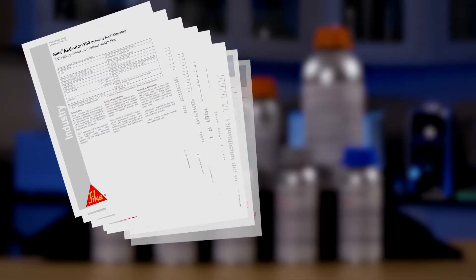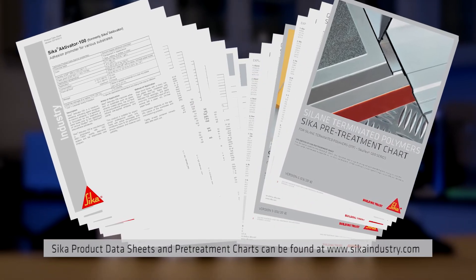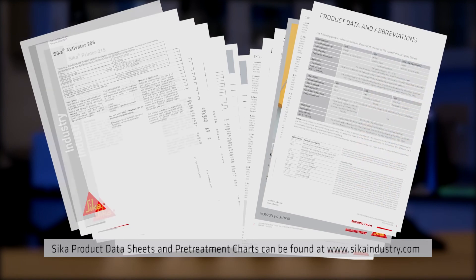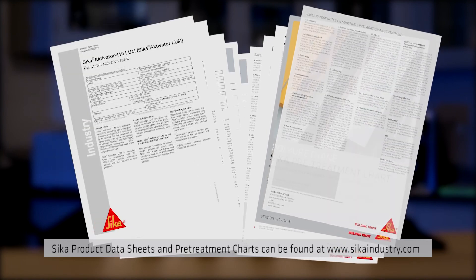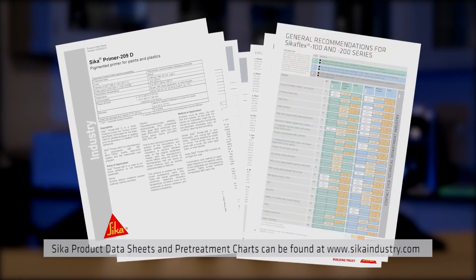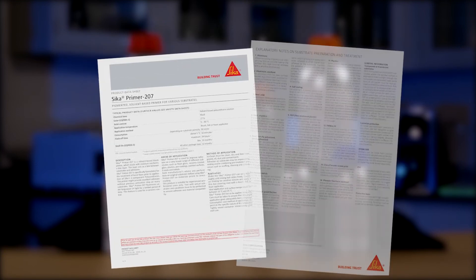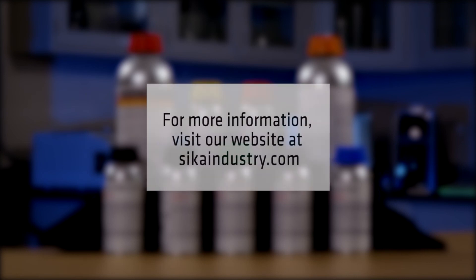Cica product data sheets and Cica pre-treatment charts offer a general guide for the preparation of substrates prior to bonding. These documents also contain very important and useful information about substrate characteristics. In any case, it is mandatory to evaluate suitable surface preparation procedures by testing with original substrates. Please contact Cica technical service for more information or visit our website at cicaindustry.com.